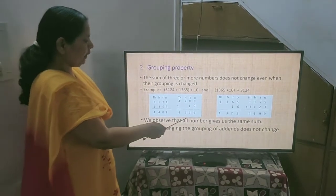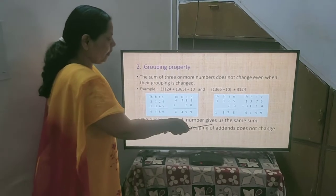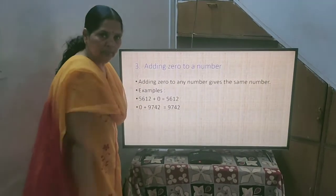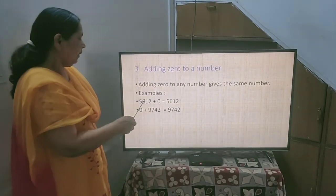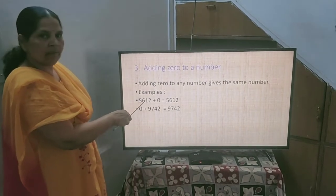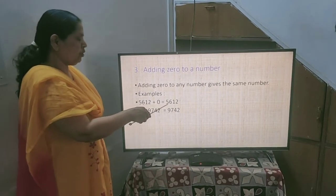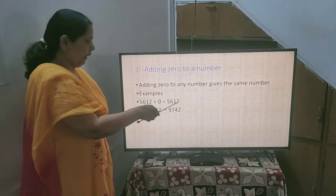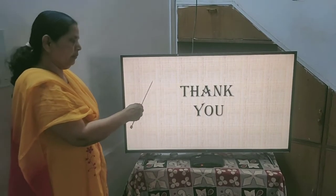We observe that all the numbers gives us the same sum. Hence, changing the group of addends does not change the sum. Now 3rd is adding 0 to a number. If you add any number to 0, suppose 5612, it gives you the same answer. This is the 3rd property of adding numbers.